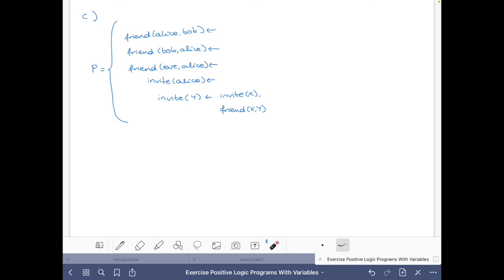And we also have that for every X and Y, if X is invited and Y is a friend of X, and X is a friend of Y, then Y is also invited to the party.